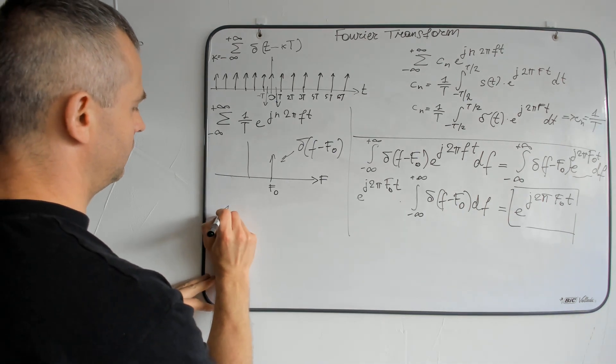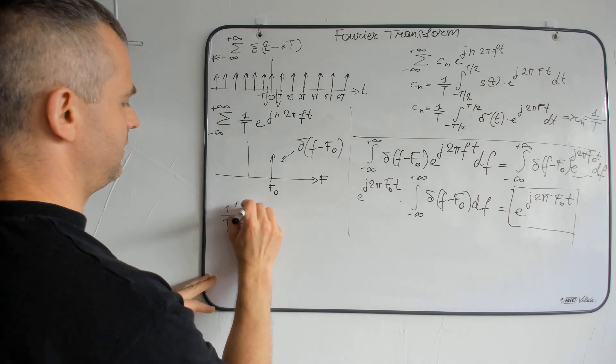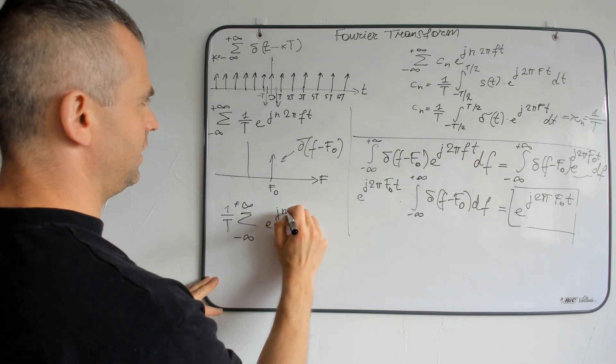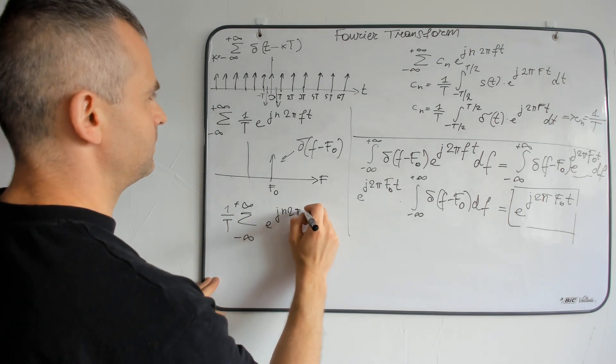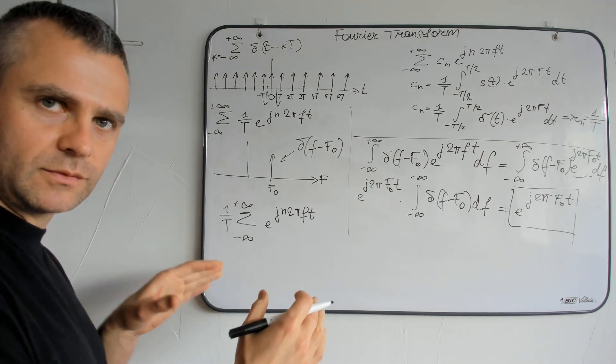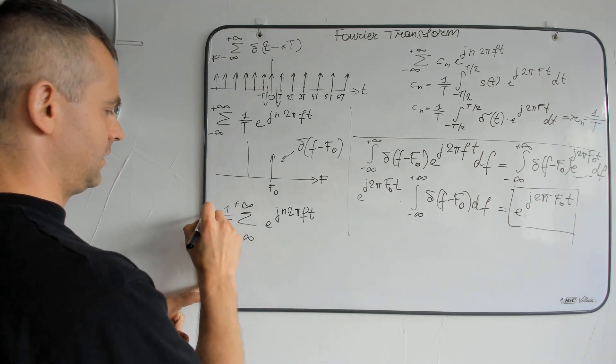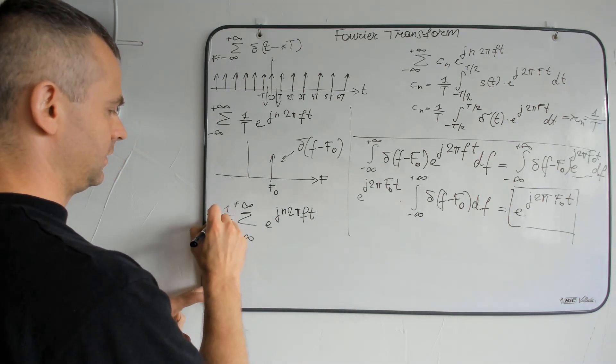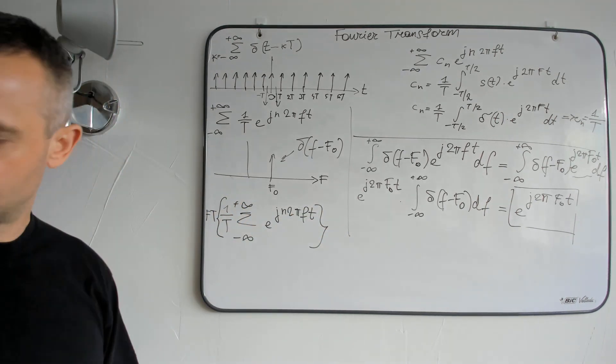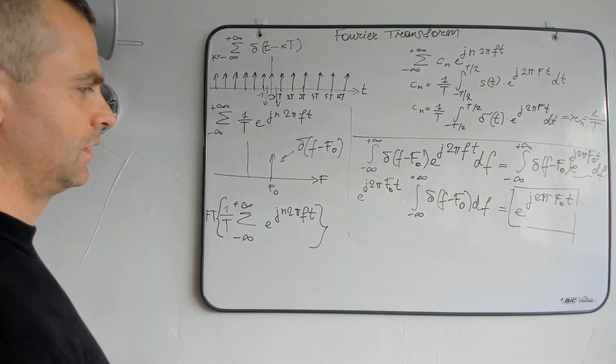So I will rewrite here 1 divided by T, sum from minus infinity to plus infinity, exponential of jn2πf t. And we want to transform this to frequency domain, so I will apply a Fourier transform to this relation.